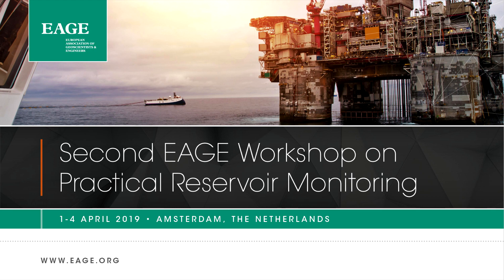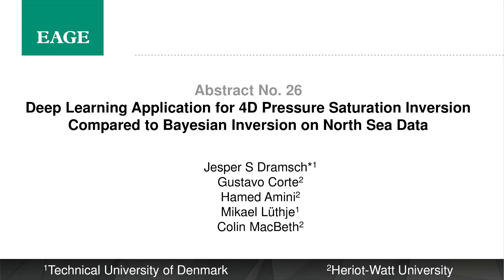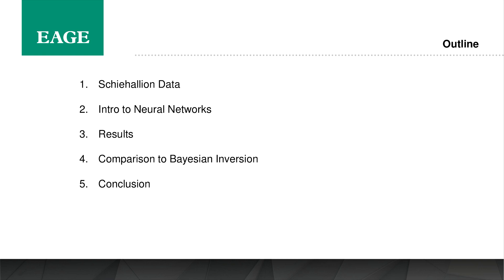I'm here to complicate things. First of all, we're going to have a lot more parameters. We're going to do AVO but we're still going to stay map-based. So what we're talking about is deep learning. I want to mention I'm not Google — they do amazing work but they're paid much better than me and a bit smarter, so the results here are okay but not magic. We're going to work with the Schiehallion data — motivate you with a bit of data, then dive into neural networks, then the results, compare to a Bayesian inversion from my co-author Gustavo Korte, and some conclusions. We only have 20 minutes.